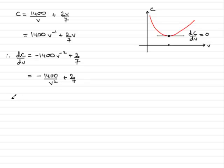So all we need to say now is, therefore, when C is a minimum, dc by dv will equal zero. And if that equals zero, then we've got this quantity equals zero. So therefore, minus 1400 over V squared plus two-sevenths equals zero.